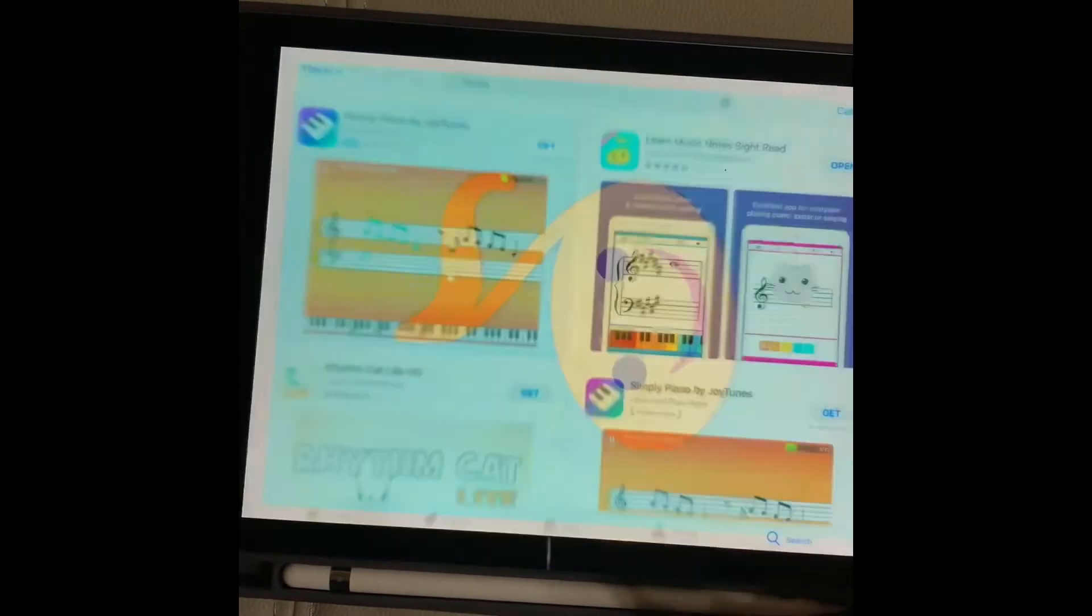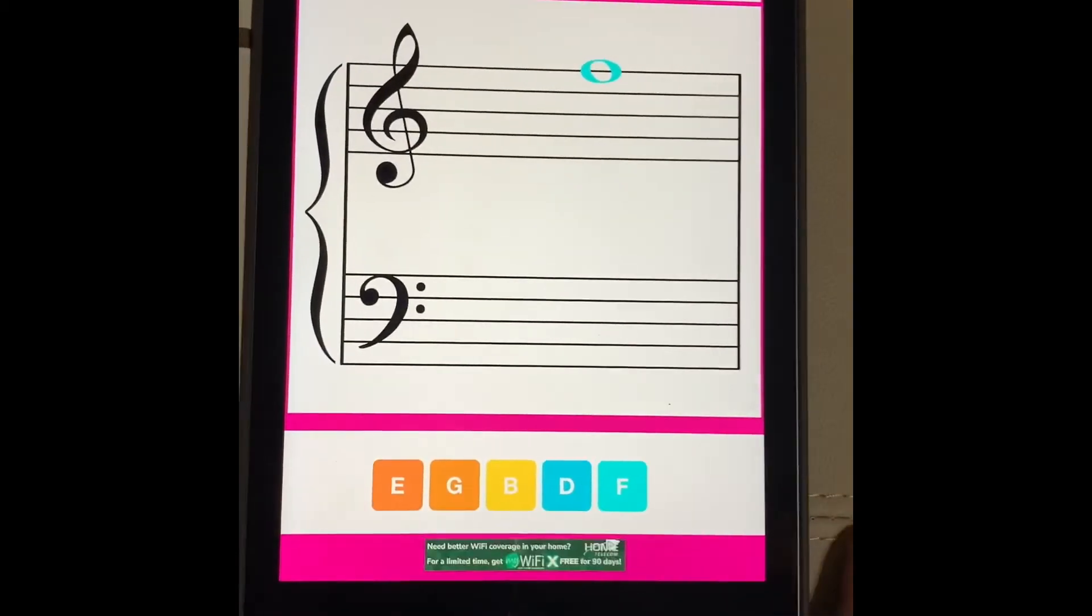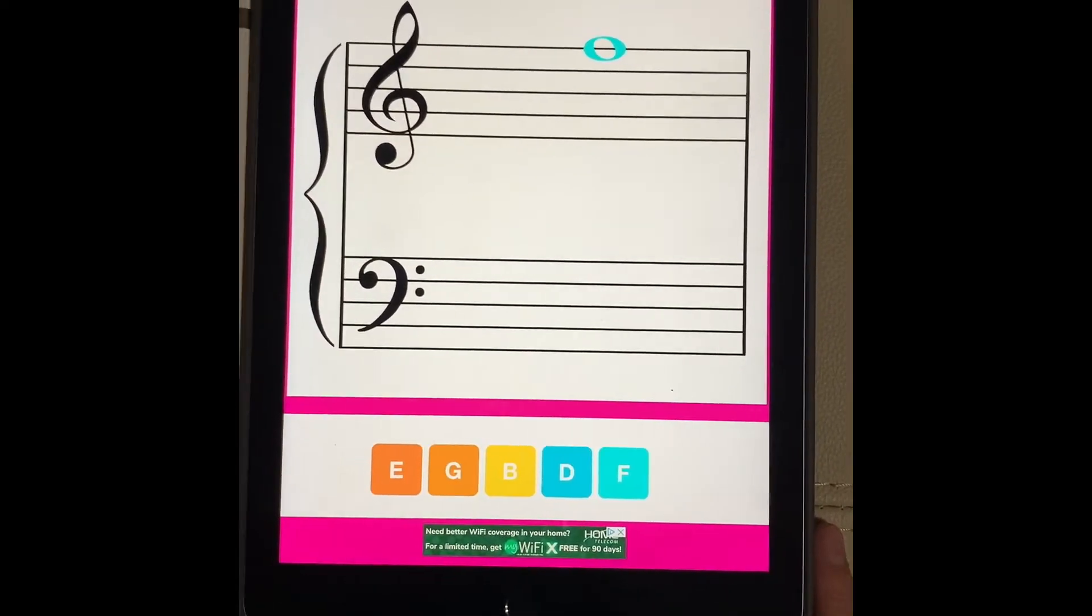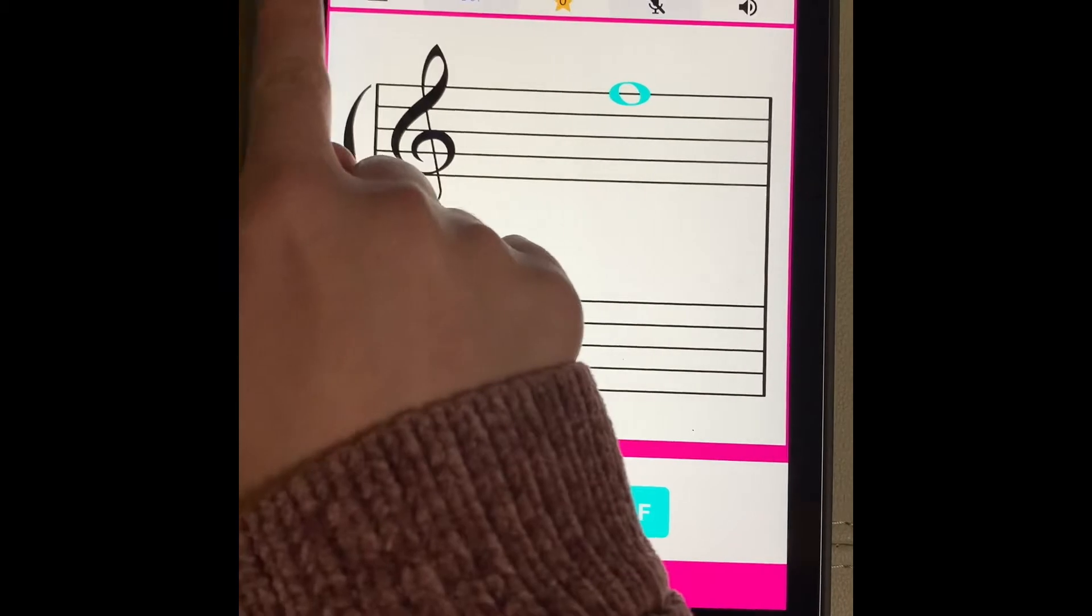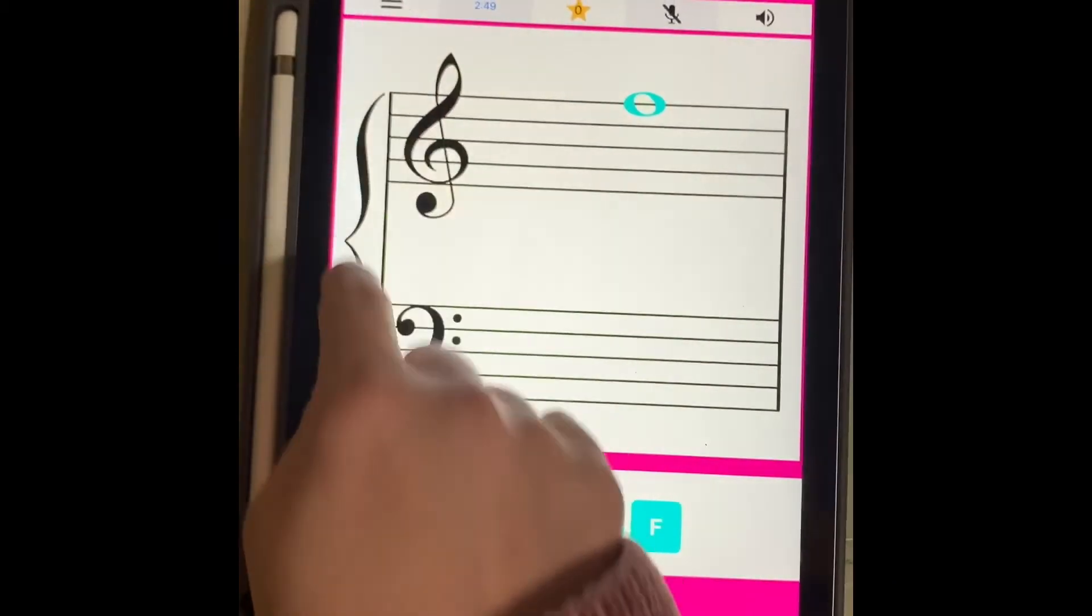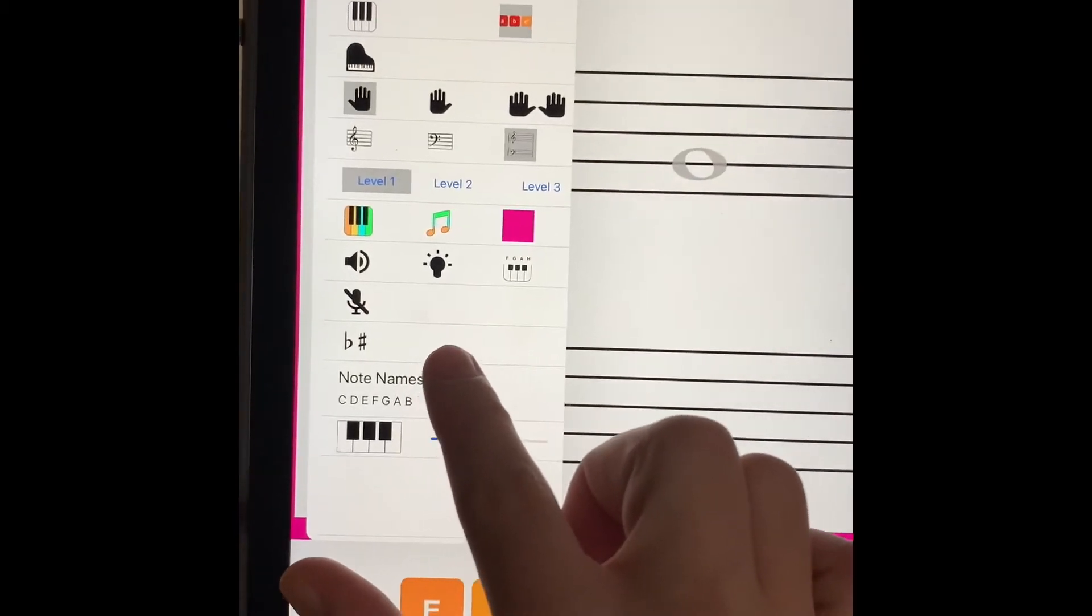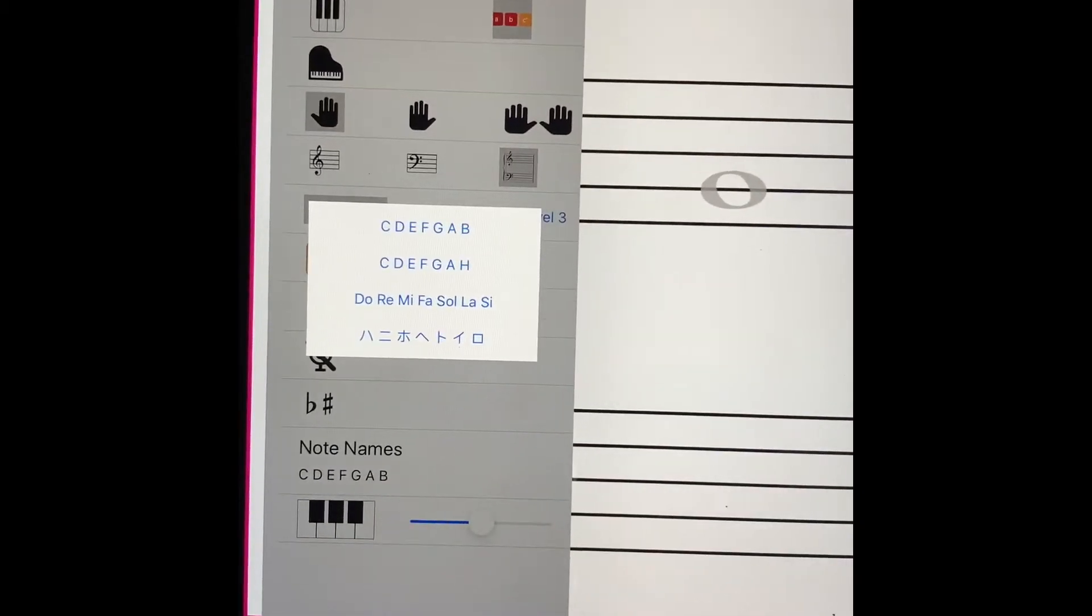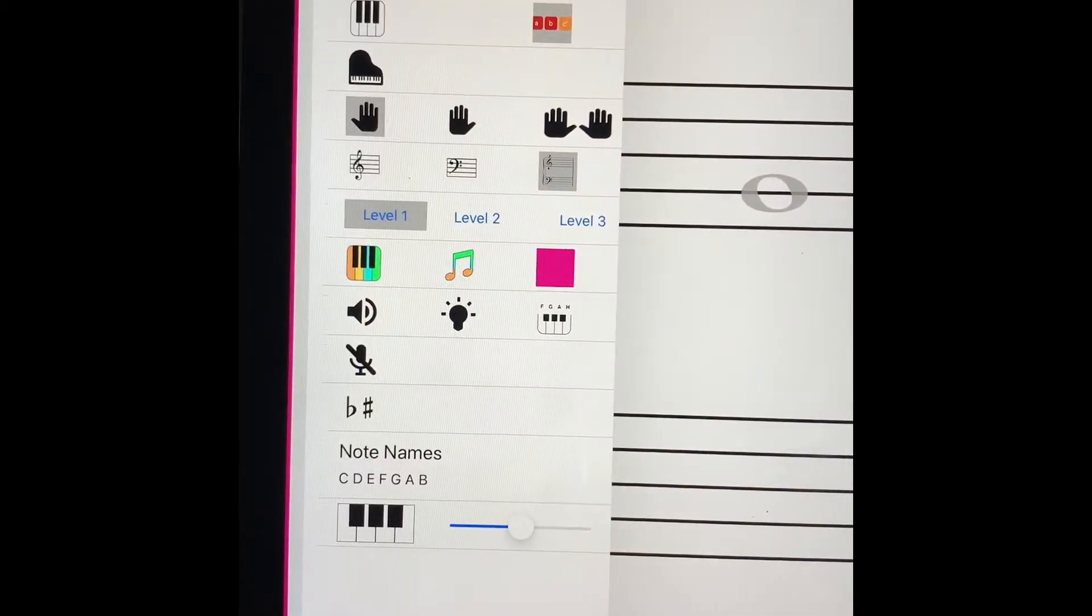This note reading app is extremely helpful because your kids can actually play their instruments and get feedback from the app. So the way you want to configure this is by going to the upper left-hand corner and then you want to go down here, Note Names, and you want C-D-E-F-G-A-B, which it already is configured on.